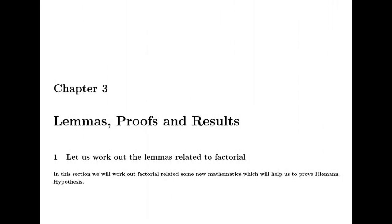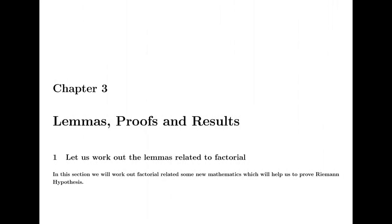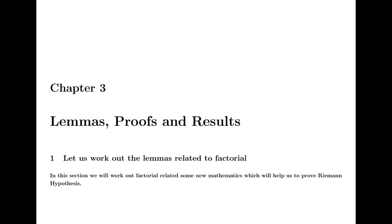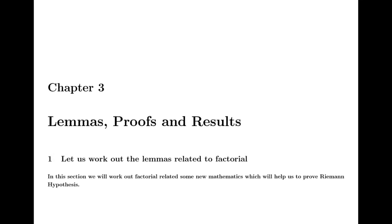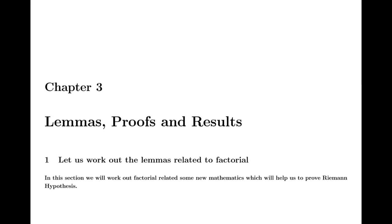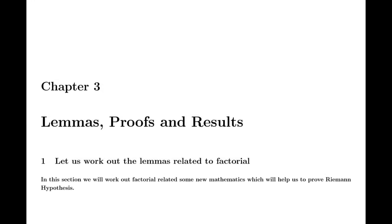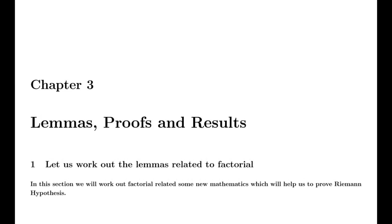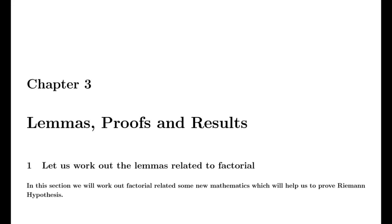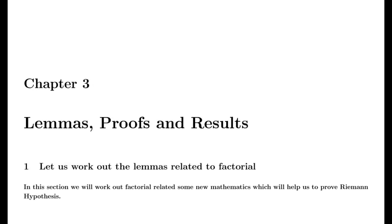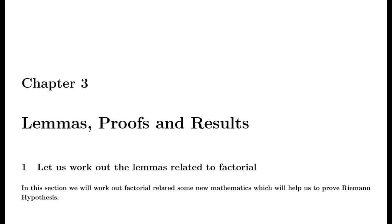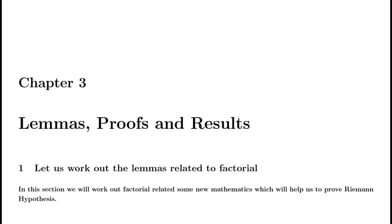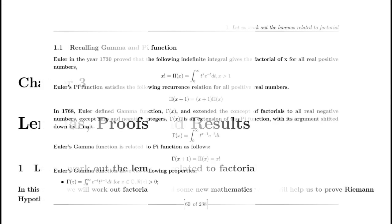In the intricate landscape of complex analysis, the Riemann zeta function has long held a mystique, with its secrets seemingly just out of reach. My journey into this enigma began with an exploration of the zeta function's extension beyond its traditional confines. At the heart of my proof lies the extension of the Riemann zeta function. The key was an alternate functional equation, one that emerged from the reflection properties inherent in both the zeta and gamma functions. This equation wasn't merely a mathematical curiosity; it became the linchpin of a deeper understanding.